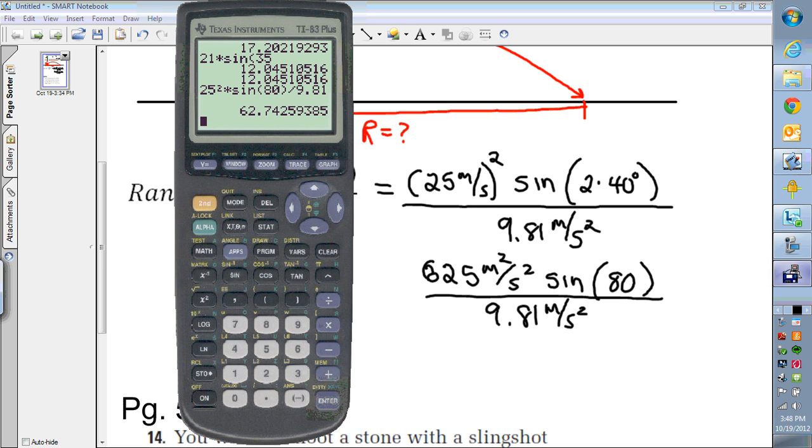We'll bring up our calculator and work that out. So we have 25 squared times the sine of 80 degrees, and divide by 9.81, and that gives us an answer of 62.7 meters. So about 63 meters is how far that goes, way down the field.